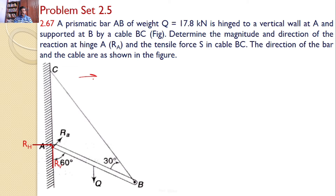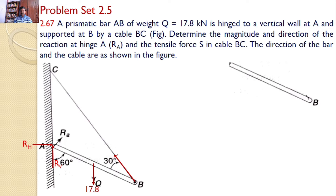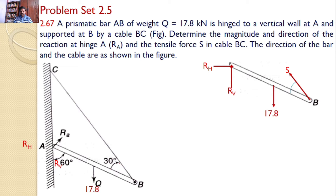Initially, we are assuming these two directions. If we get positive values, these directions are correct; if we get negative values, these directions need to change. The self-weight is Q, that is 17.8 kN, and there is a force along string BC. Initially, we are assuming it is a tensile force acting away from point B. Given that BC makes an angle of 30° with the prismatic bar AB, S makes an angle of 30° with AB.